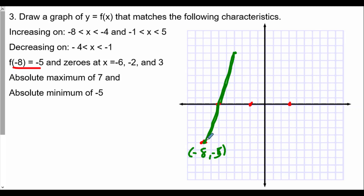Then we come downwards — decreasing all the way to x equals negative 1. From the highest point, I go down and pass through the required points along the way. Then it says the graph is increasing from negative 1 to 5, so from x equals negative 1 all the way to x equals 5. I could have gone all the way up to 7 again, but since we already established the absolute maximum at negative 4 comma 7, I kept this portion lower.